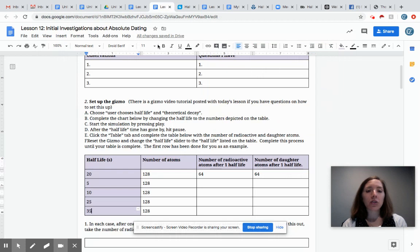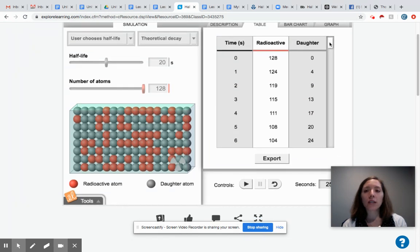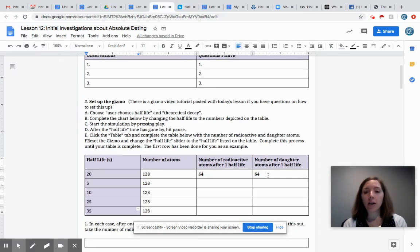Next thing the directions asked me to do, it says click the table tab and complete the table below with the number of radioactive and daughter atoms. So if you click table here it gives you the number of each of these types of atoms over time. We're going to scroll down to our Half-Life time which was 20 seconds and we're going to record the number of radioactive and daughter atoms and here it's 64 and 64. You're going to go and put that in your chart. Now I already did this for you.